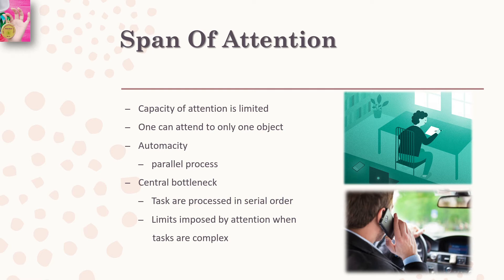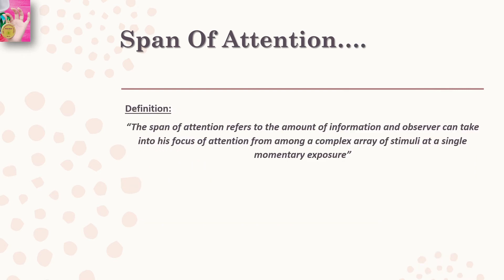When two tasks requiring complex processing cannot be processed in parallel simultaneously, such tasks are processed in serial order, one after another. This is called the central bottleneck in information processing, which is caused by the limits imposed by attention when tasks are complex. In order to ascertain the range of limitation of the attentional process, psychologists have made attempts to investigate the number of objects one can attend to at a brief exposure — that is, a fraction of a second, usually one-tenth of a second. This is what we call the span of attention or perceptual span.